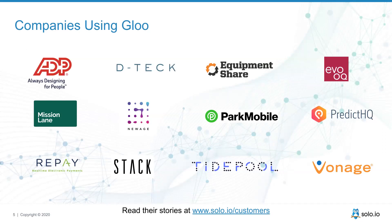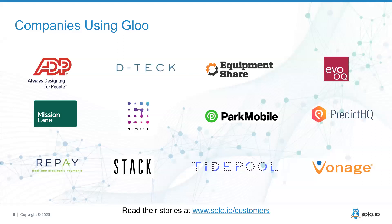Glue was launched back in 2018-2019, and at this point we've got a large number of customers and companies using it — companies like ADP, Park Mobile, and Vonage. Large, well-known organizations are now using Glue for production use cases. If you want a better understanding of exactly how those organizations are using Glue, we've got testimonials on our website and a series of blog posts with customers going into detail about their usage and how it fits into their broader organizational technology push.